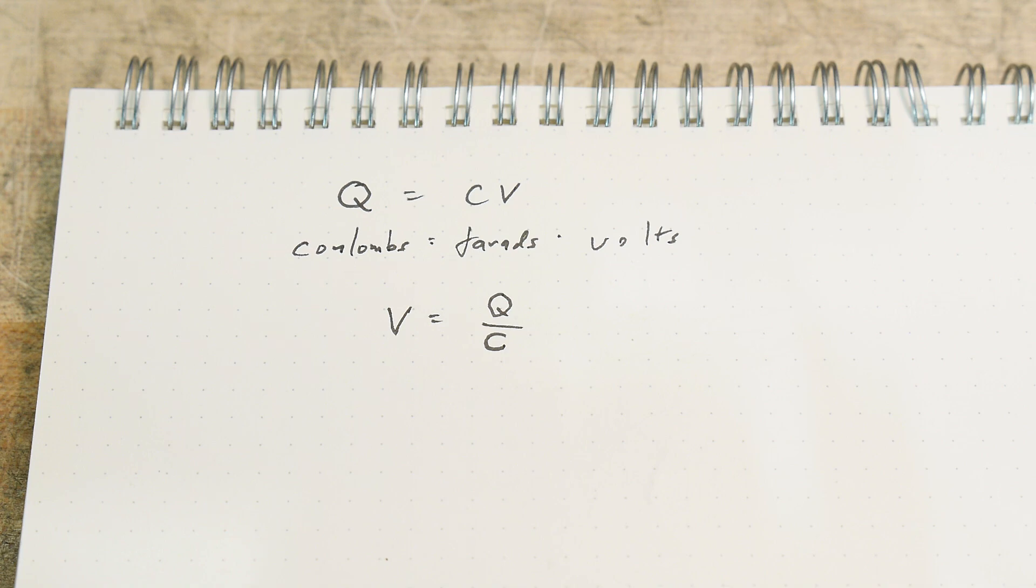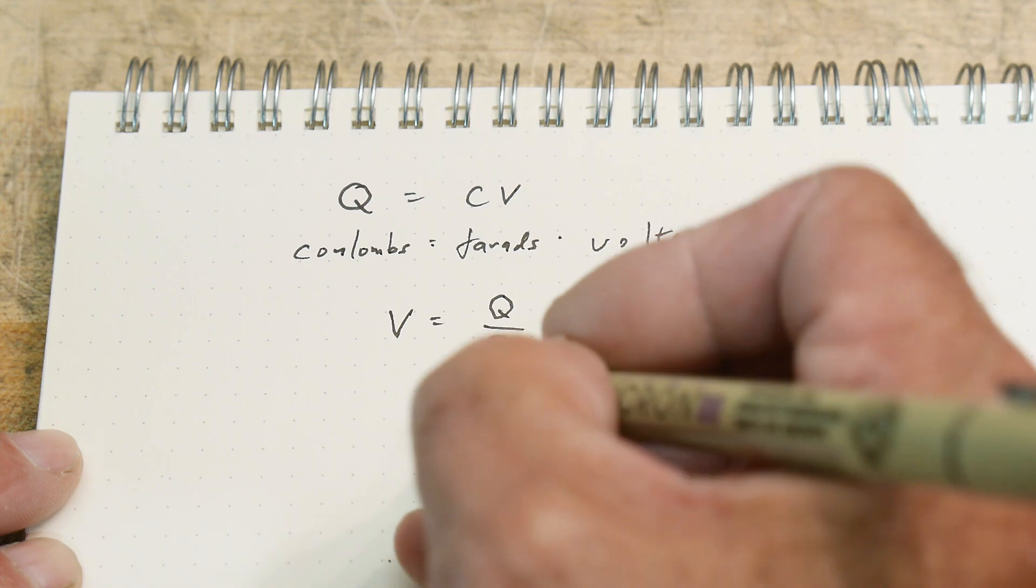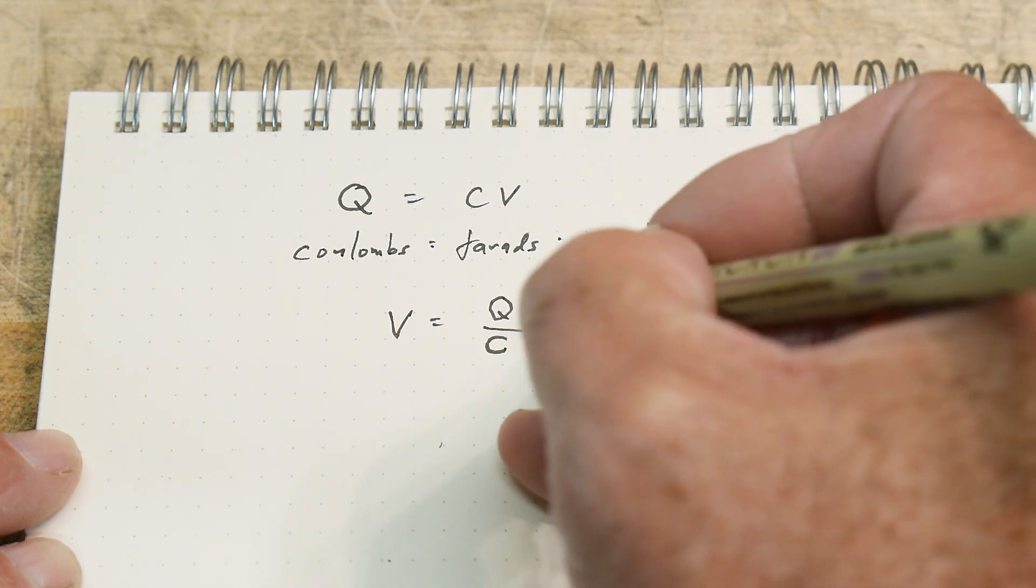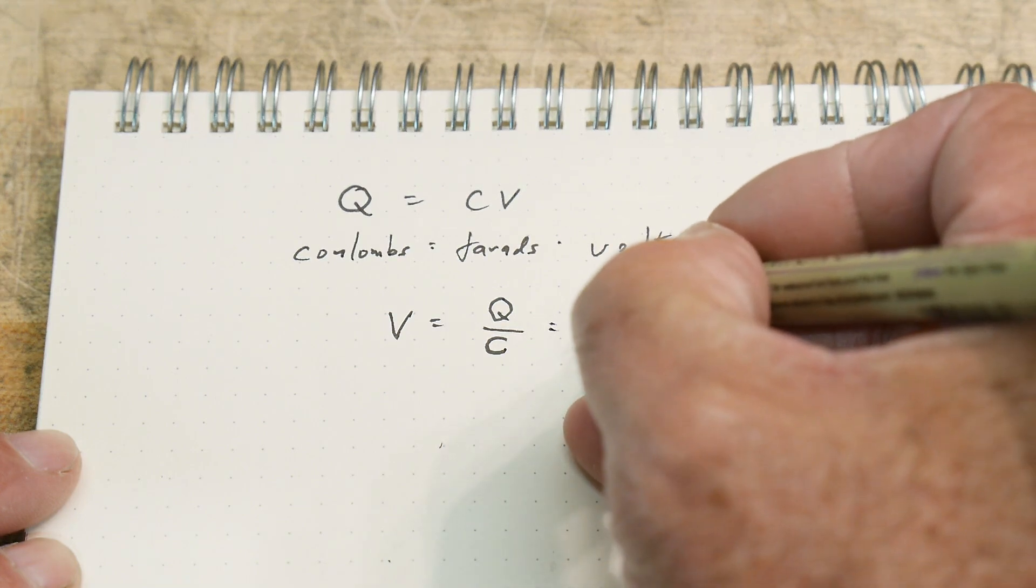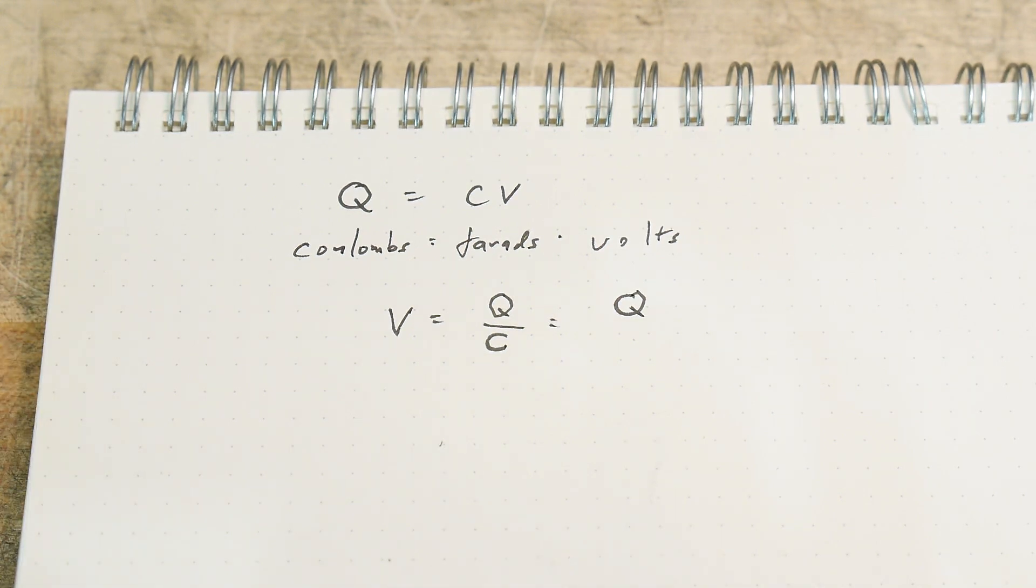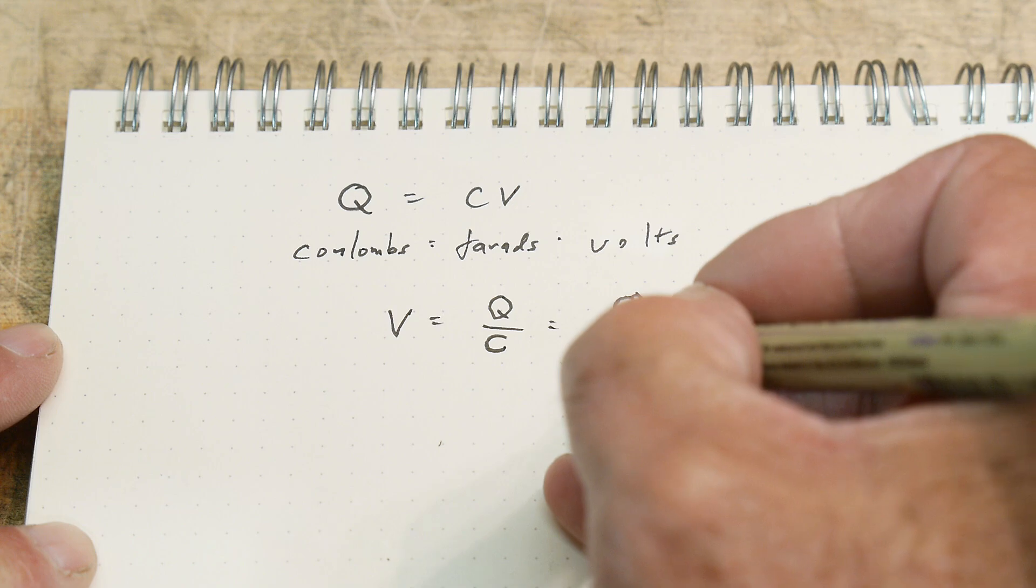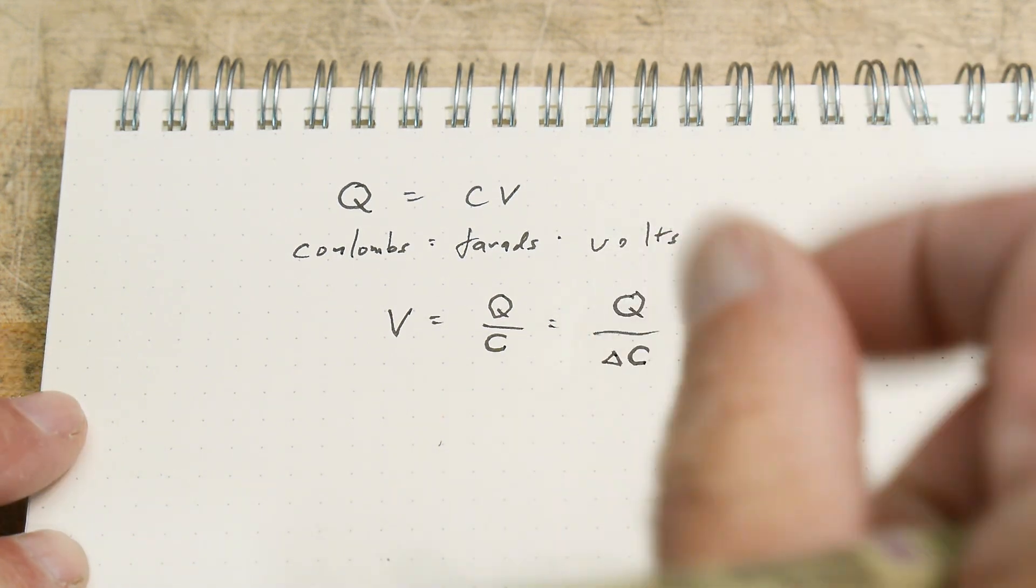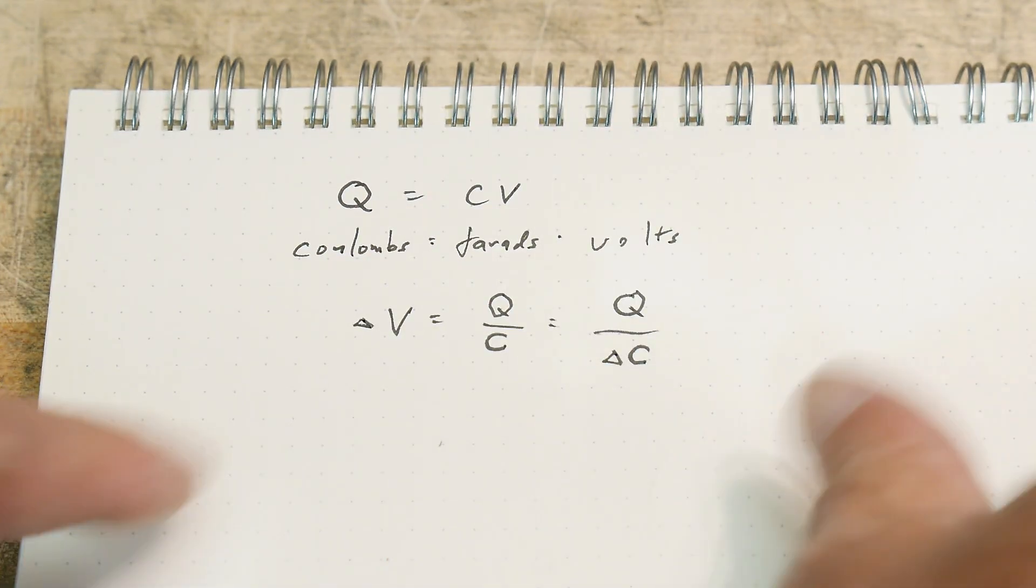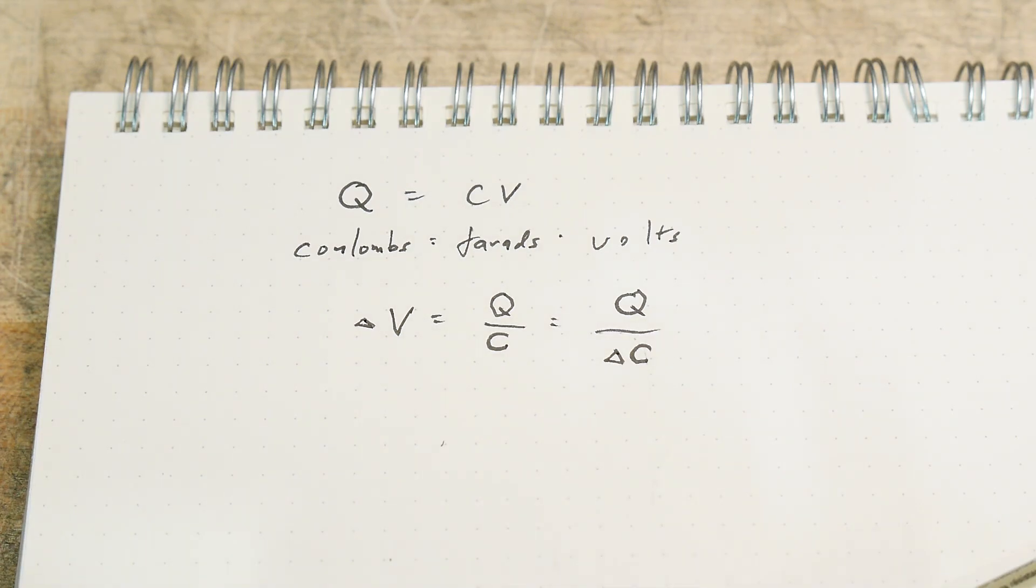What we can do is an experiment where we have a fixed charge, a starting condition with a fixed charge, and then we can vary the capacitance. We can change the capacitance and we should see a change in voltage. So if you have a change in capacitance, you should have a change in voltage.